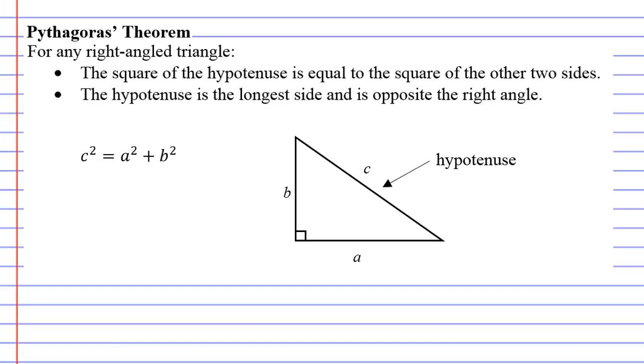Pythagoras' Theorem. For any right-angled triangle, we have two dot points. The square of the hypotenuse is equal to the square of the other two sides, point 1. And point 2, the hypotenuse is the longest side and is opposite the right angle.